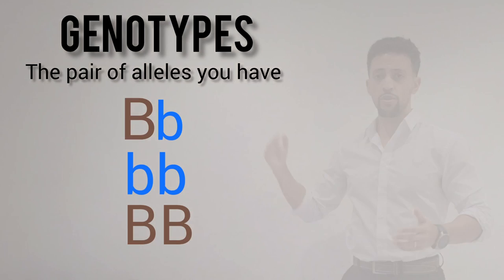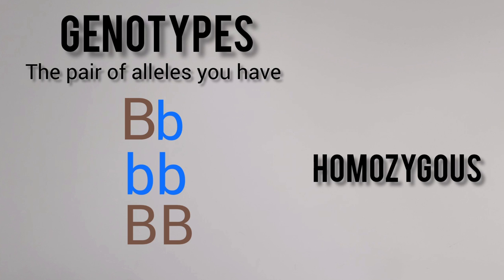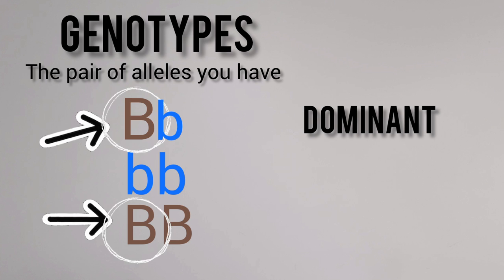Two of the same it's called homozygous — learn that term, you ain't a so-so scientist. Two different alleles we call heterozygous.